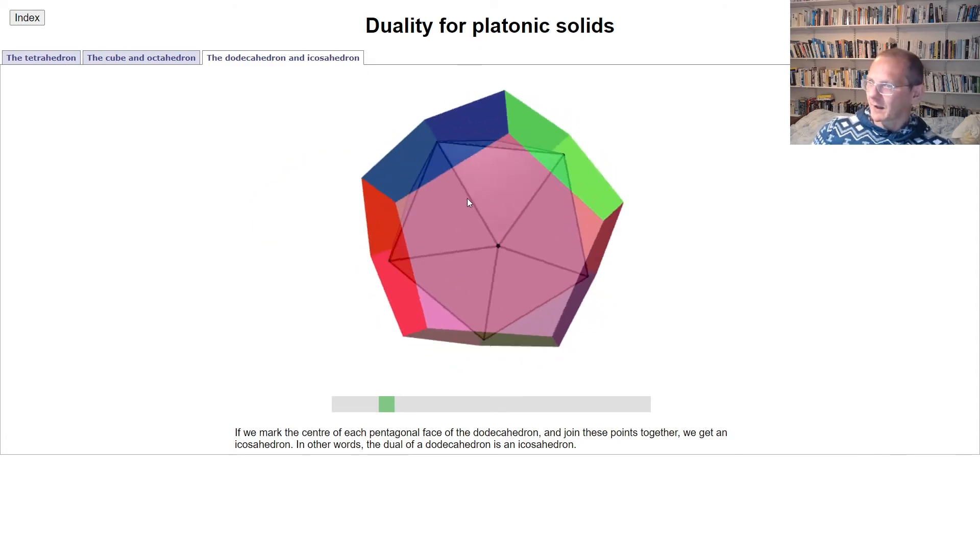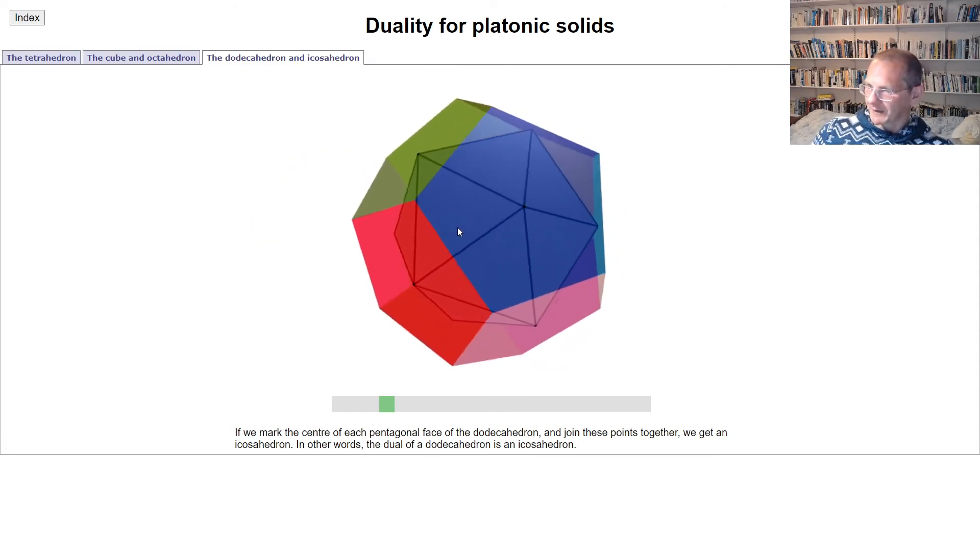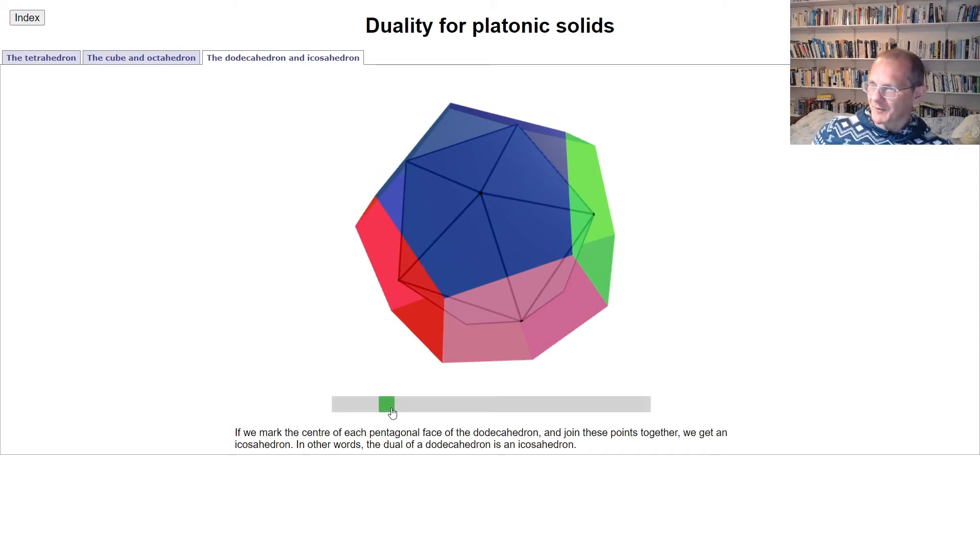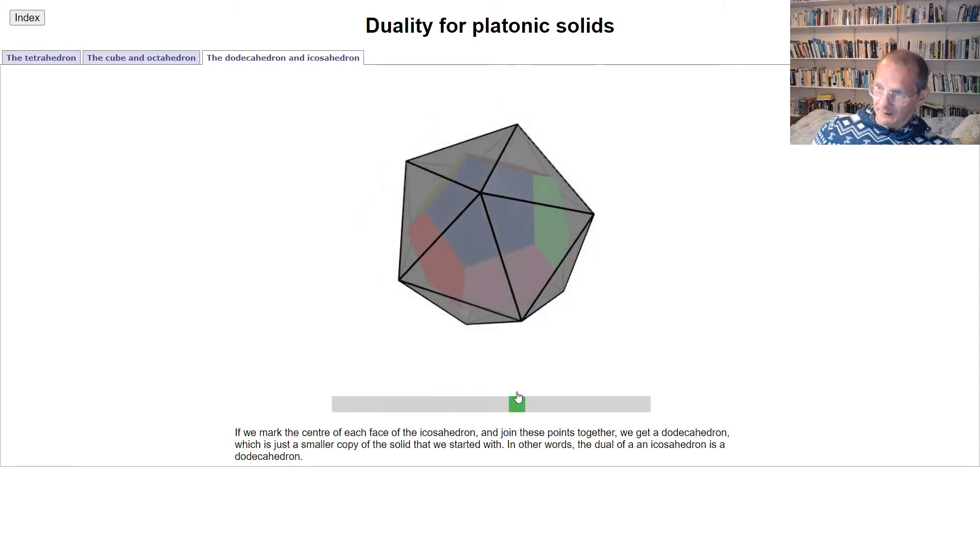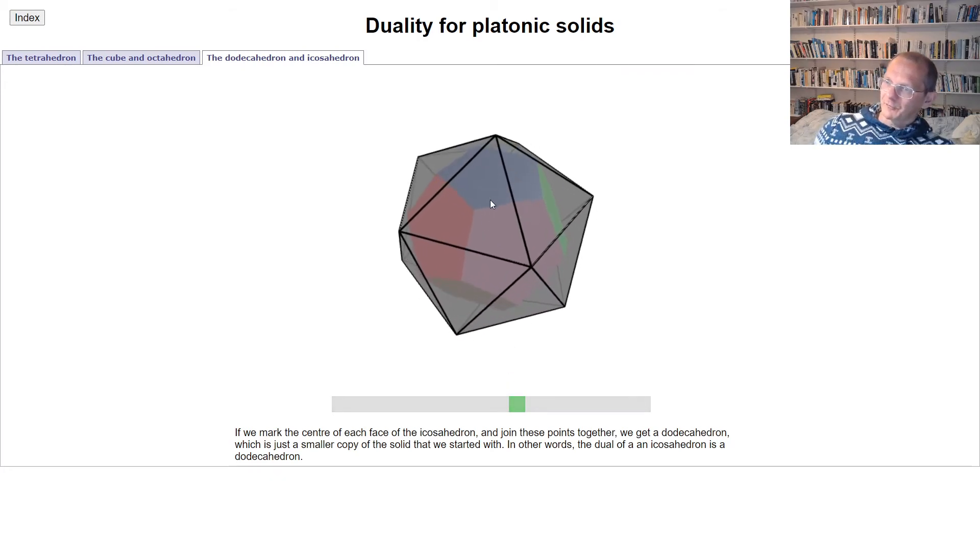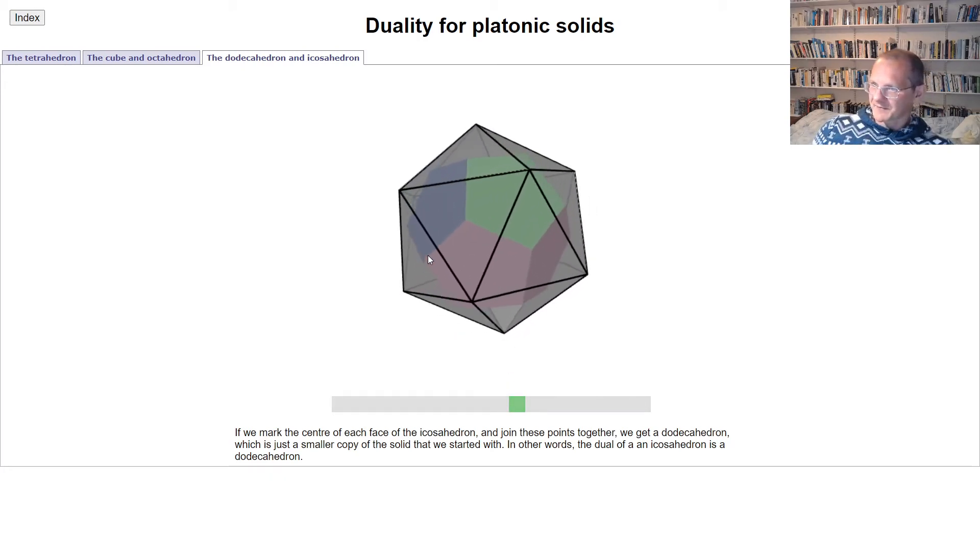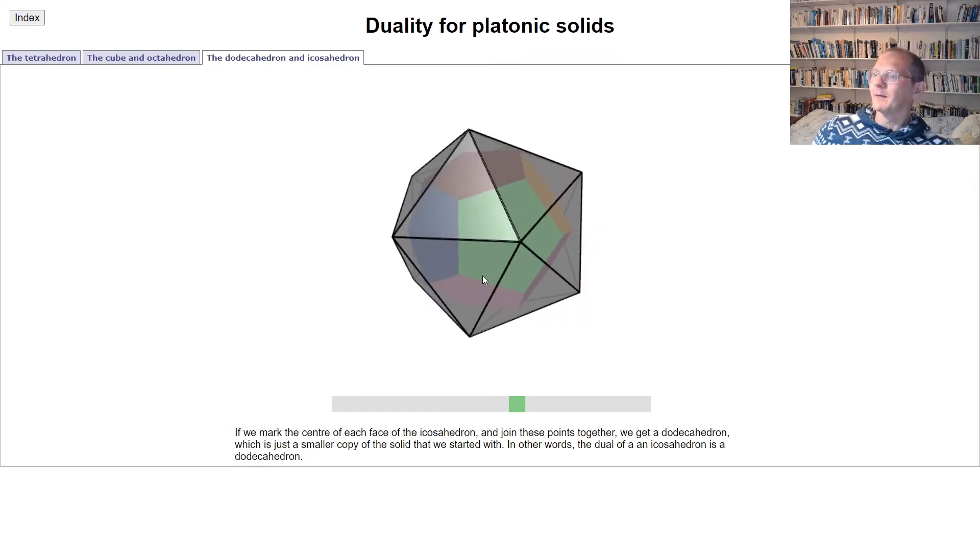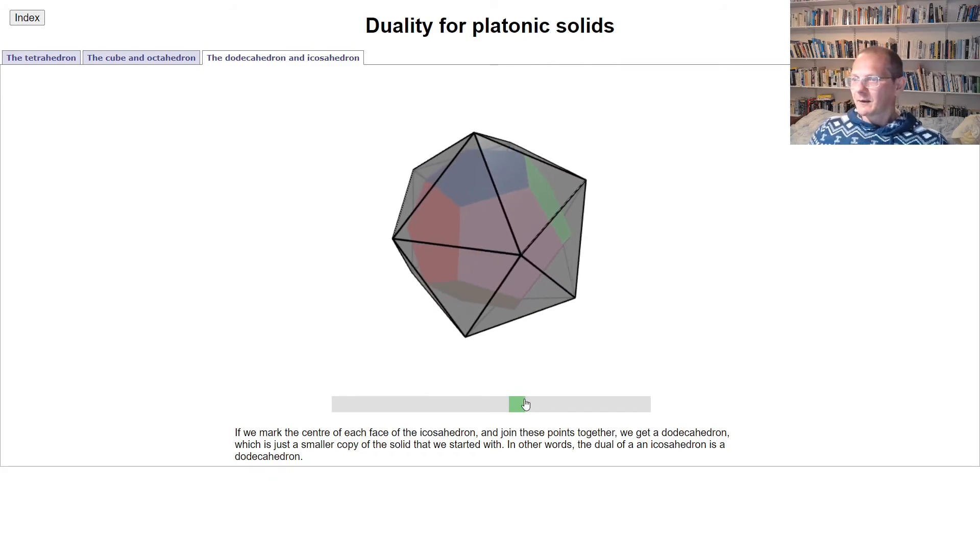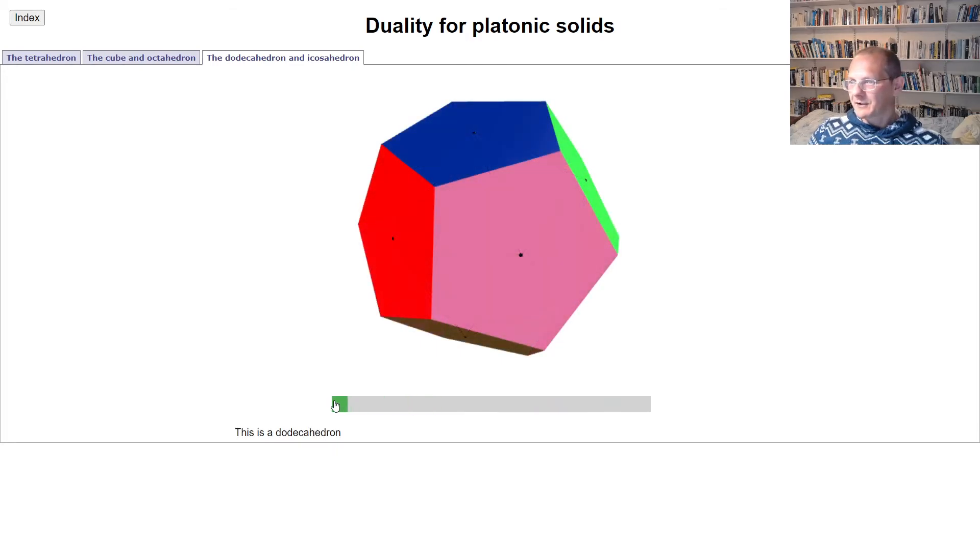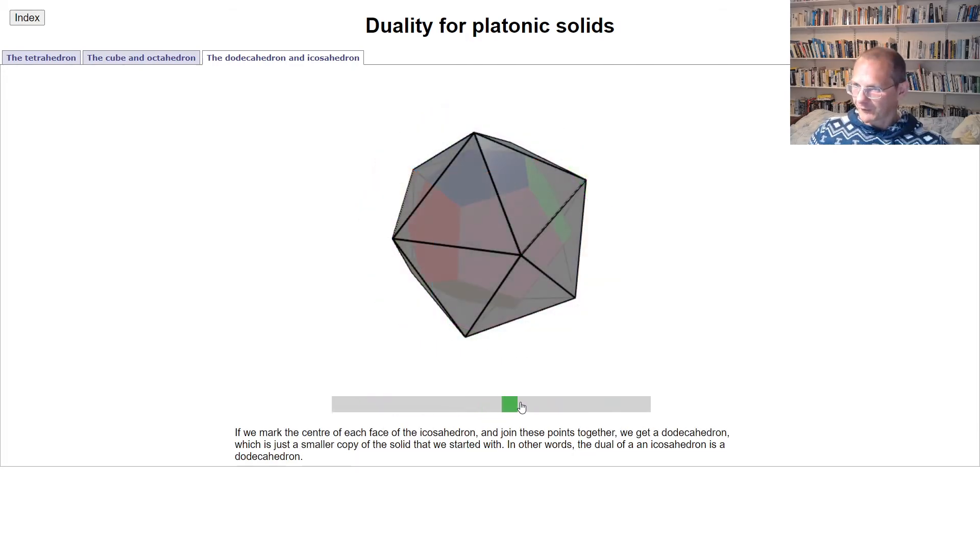So here we see an icosahedron being dual to a dodecahedron. And as we've seen in the other cases, the relation is symmetric. So we take the dual of the icosahedron, right? So we connect together the centers of these 20 triangular faces of the icosahedron. And what we end up getting is just the dodecahedron again. So here's our original dodecahedron and it becomes an icosahedron and then we get the dodecahedron again right in the middle.